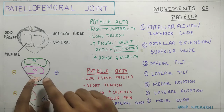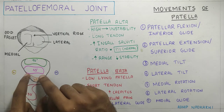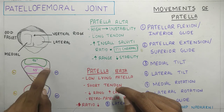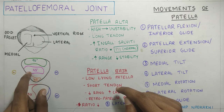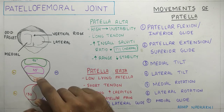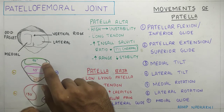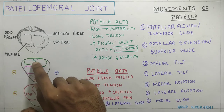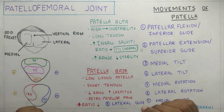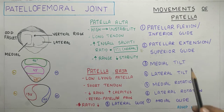As the knee starts going into more flexion, the contact area starts widening. At 45 degrees, the patella makes a larger area of contact with the femur, and at 90 degrees this area is further increased — that is the contact with the femoral condyles.